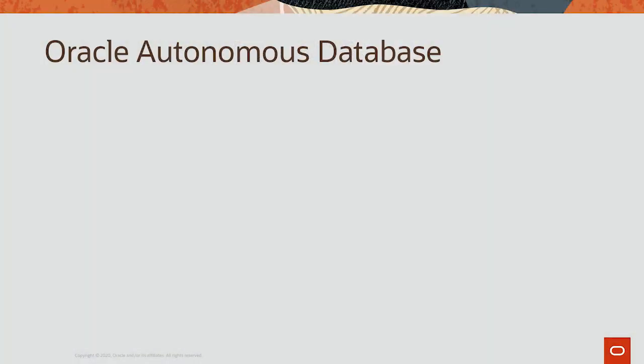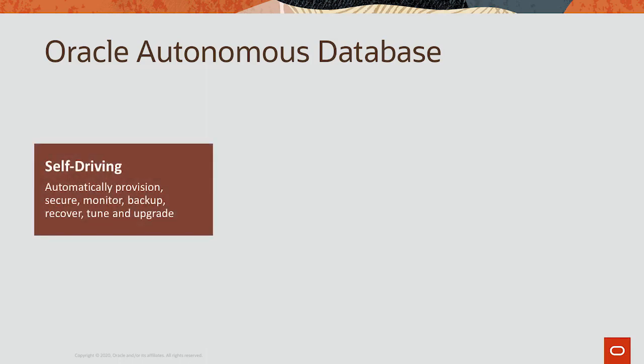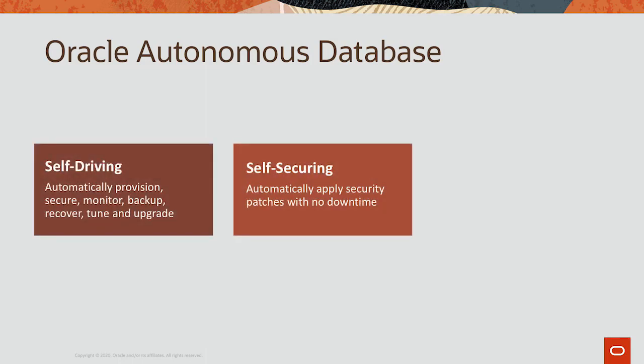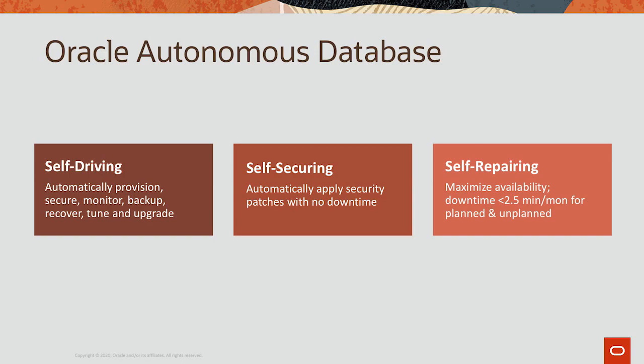No one wants to spend months building this platform from the ground up. You need automation for high availability, scalability, performance, and security — all self-serviced. For this reason, we have built Oracle Autonomous Database, which greatly simplifies enterprise architecture by eliminating trial and error. It is the world's first self-driving, self-securing, self-repairing, converged translytical database.